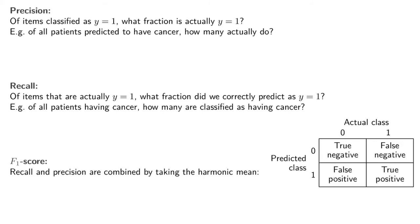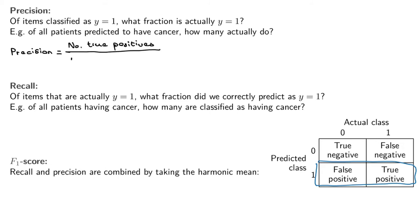So we're only looking at the predicted-positive row and asking: of those predicted as positive, how many are actually positive? Precision equals the number of true positives divided by the number of predicted positives. From the confusion matrix, that means taking the true positives and dividing by false positives plus true positives.